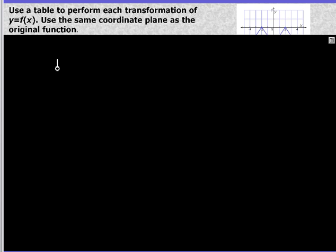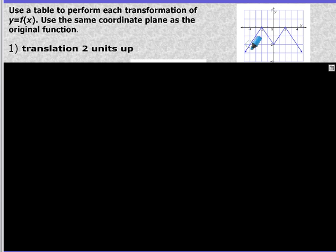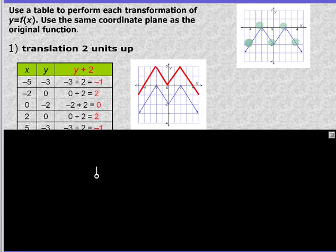Use a table to perform each translation of y = f(x). Use the same coordinate plane as the original function. A translation two units up. So what you want to do is take some of the points. I would take this point, anything that's kind of on a corner. This point, this point, this point, and this point. Those are the key points I would take. Put them into a table. They actually took these points here. Which is fine. You can choose, but you want any place the graph changes directions, you're going to want to take that point.